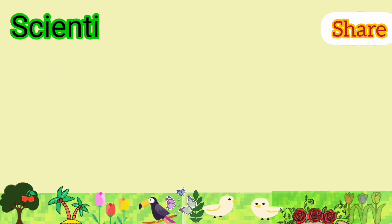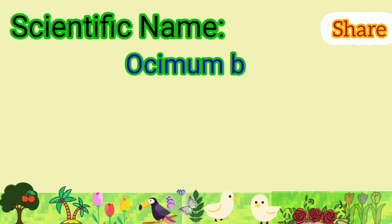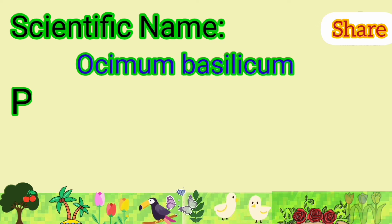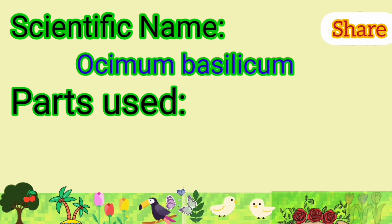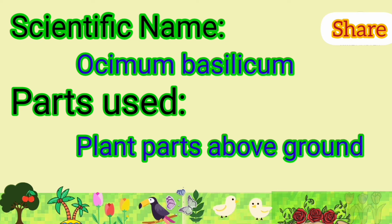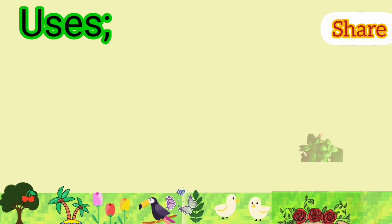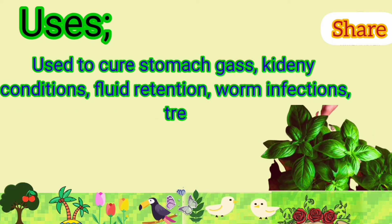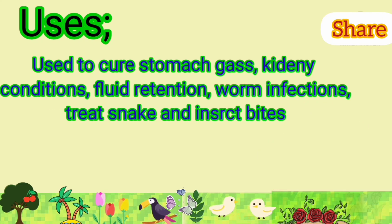Basil: its scientific name is Ocimum basilicum. Parts used are plant parts above ground. It is used to treat stomach gas, kidney conditions, and fluid retention.